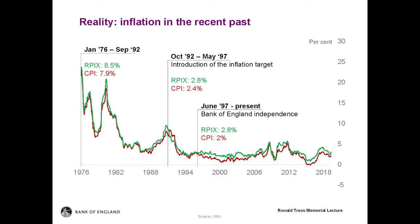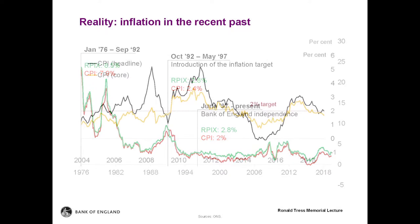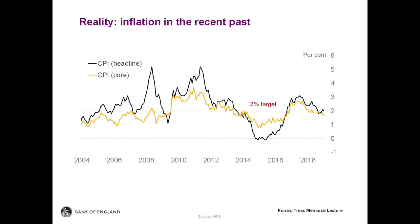Most of the misses during the post-97 period were due to the most volatile components of inflation, typically food and energy prices, which have a bigger fraction of imports in them. Assuming the period from 2004, when the CPI target was introduced, till today — in black you see CPI headline, which averaged 2% with some deviations over time. In yellow you see core inflation, which excludes those volatile components, and that index has been much closer to the 2% target, with fewer deviations over the period.